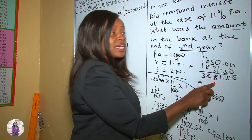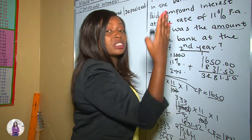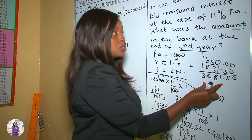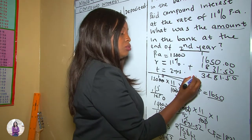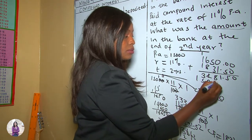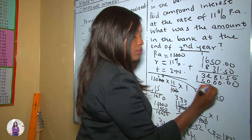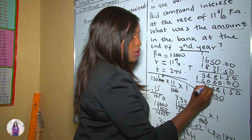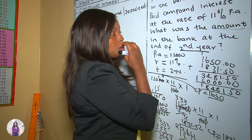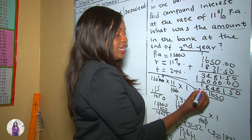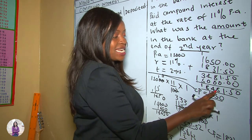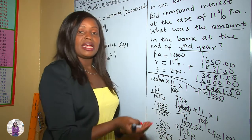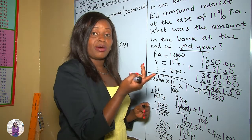The total amount in the bank is the deposited amount plus the total profit. So we add $15,000 + $3,481.50, which gives a total amount of $18,481.50 in the bank at the end of the second year.